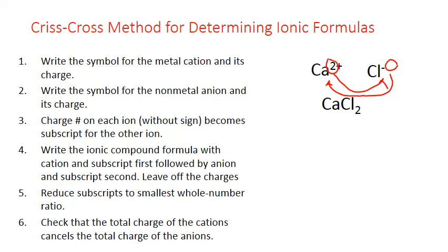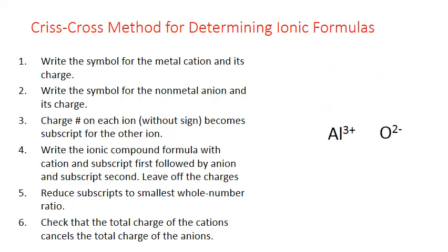Let's do another example: the formula for the ionic compound between aluminum and oxygen. From the periodic table, aluminum forms ions with a +3 charge and oxygen with a −2 charge. Crisscrossing those charge numbers means the 3 on aluminum becomes the subscript on oxygen, and the 2 on oxygen becomes the subscript on aluminum. Writing the final formula and leaving off the pluses and minuses gives Al₂O₃.